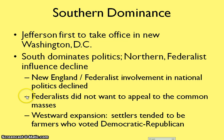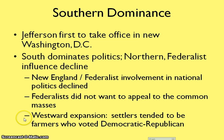Federalists did not want to appeal to the common masses — they were often the more wealthy, upper-class people who wanted things to stay the same. The Democratic-Republicans wanted expansion, free trade, and to make sure farmers and merchants were happy. Western expansion also contributed to this shift, as settlers moving westward tended to be farmers who would identify as Democratic-Republicans, not Federalists.